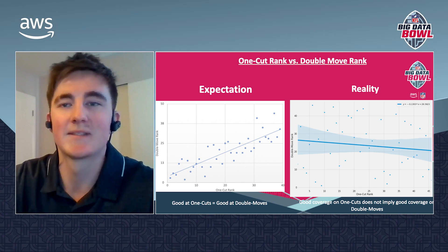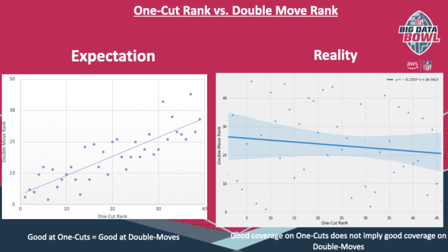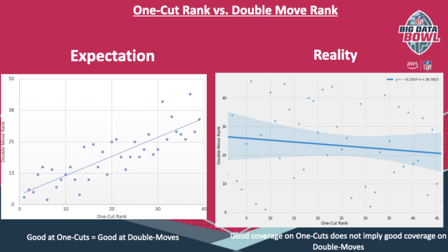When I initially plotted the rankings for both route types, I expected to see a linear relationship between one-cut routes and double moves — where if a defender was good at covering one-cut routes, they were probably good at covering double moves. However, that's not the case. The right-hand chart shows the reality: there's actually no relationship between a defender being good on one cuts and being good on double moves. My initial thought was that I did something wrong, but it became clear that for some players there's actually a trade-off — they might be good at covering one cuts because of their aggressive play style, but that leaves them susceptible to being burned on double move routes.